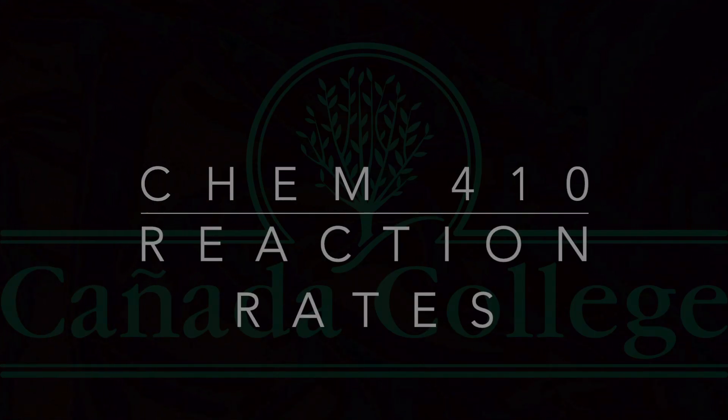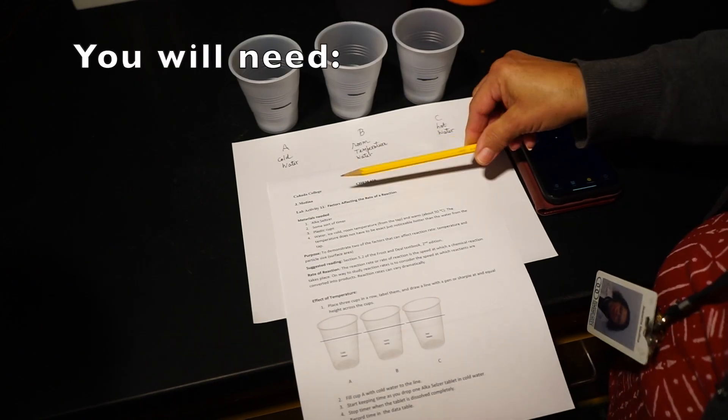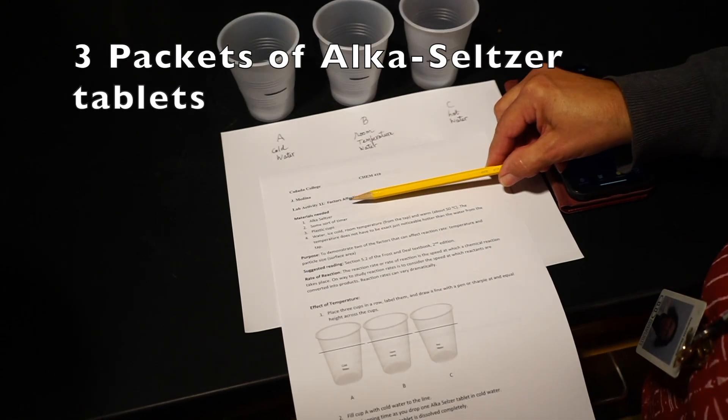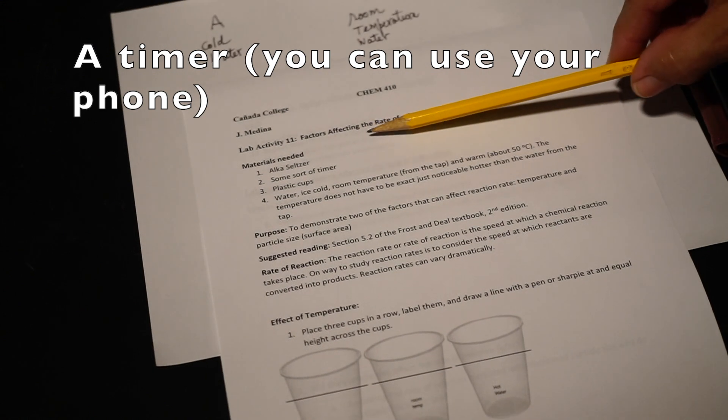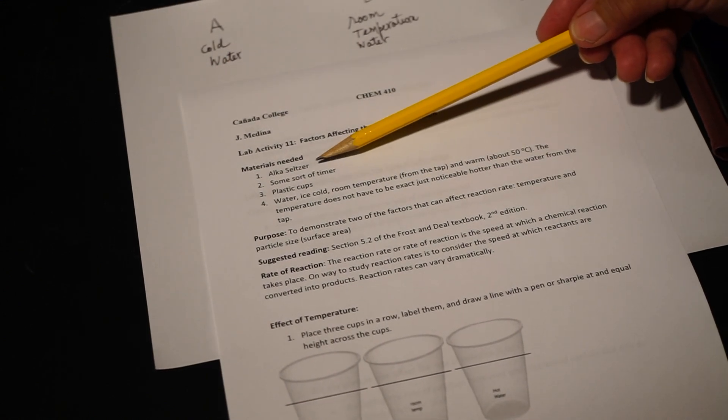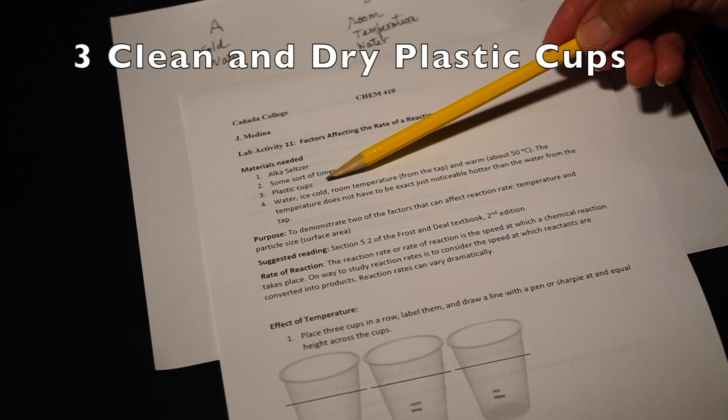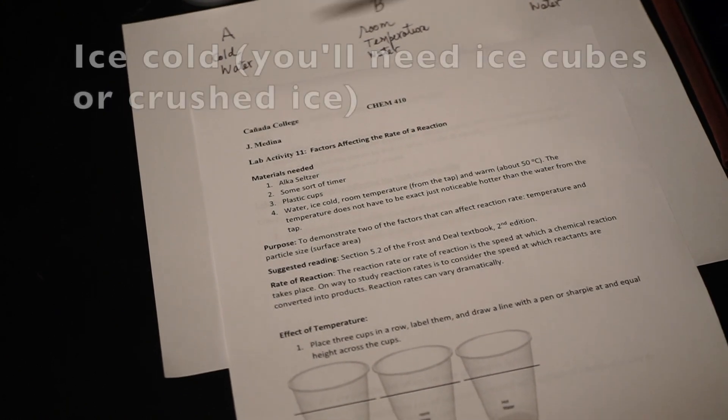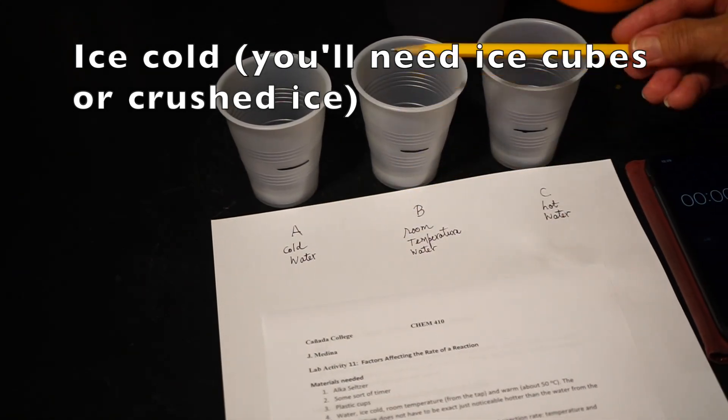Factors affecting reaction rate. You will need Alka-Seltzer, a timer (you can use your phone), three clean dry plastic cups, and water at three different temperatures: ice cold, room temperature, and warm water.